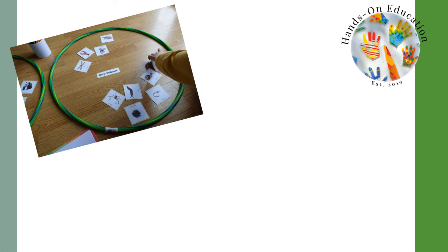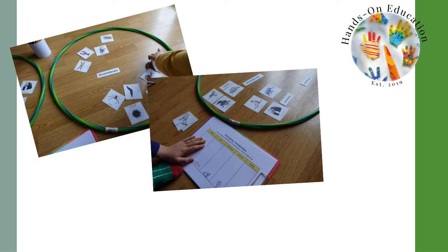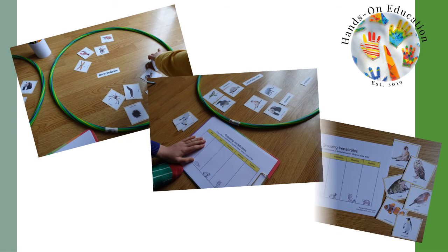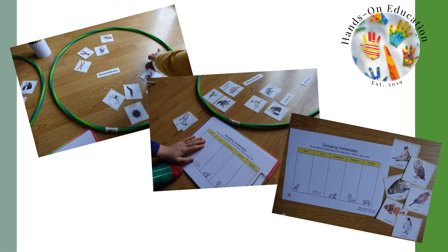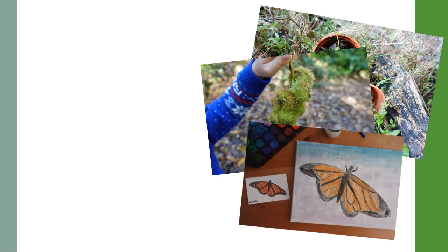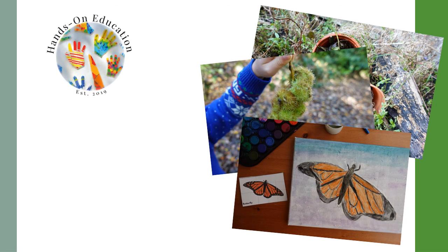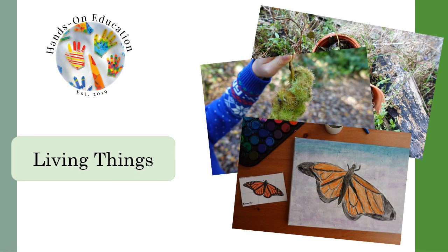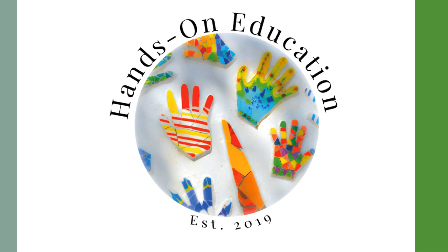For your hands-on activity, group images of animals and plants based on their similar characteristics and features. You can record these observations in a table. For more information about this activity and more related activities please go to handsoneducation.com living things. I hope you enjoyed this video — please like and subscribe and we will see you soon. Bye!